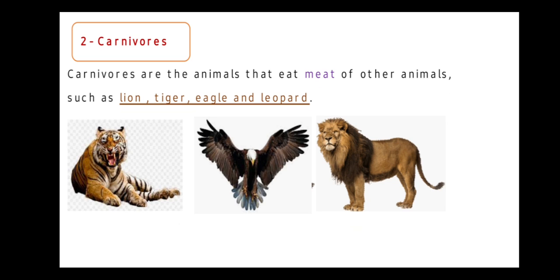Like lion, tiger, eagle, and leopard. All these animals are called Carnivores. Carnivores are the animals that eat meat. Carnivores eat meat.